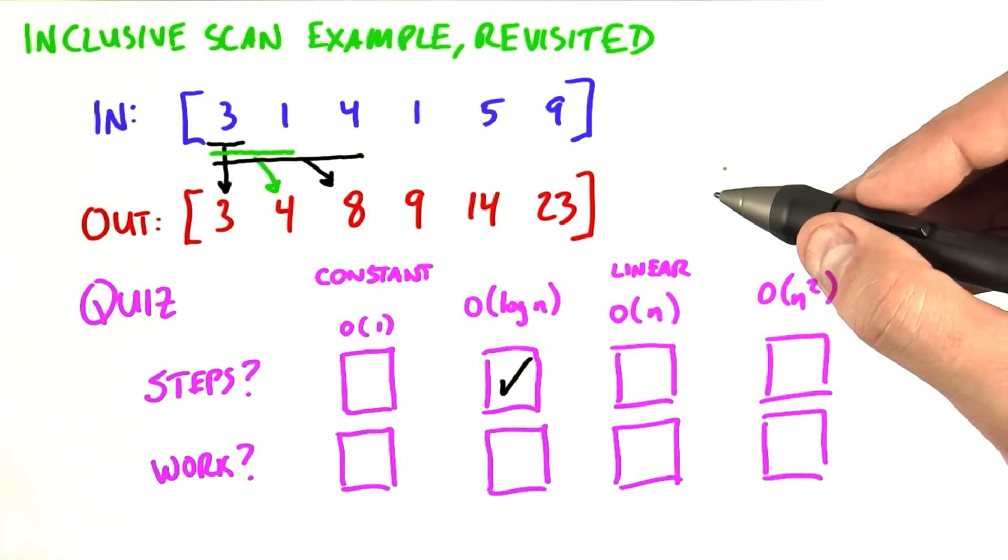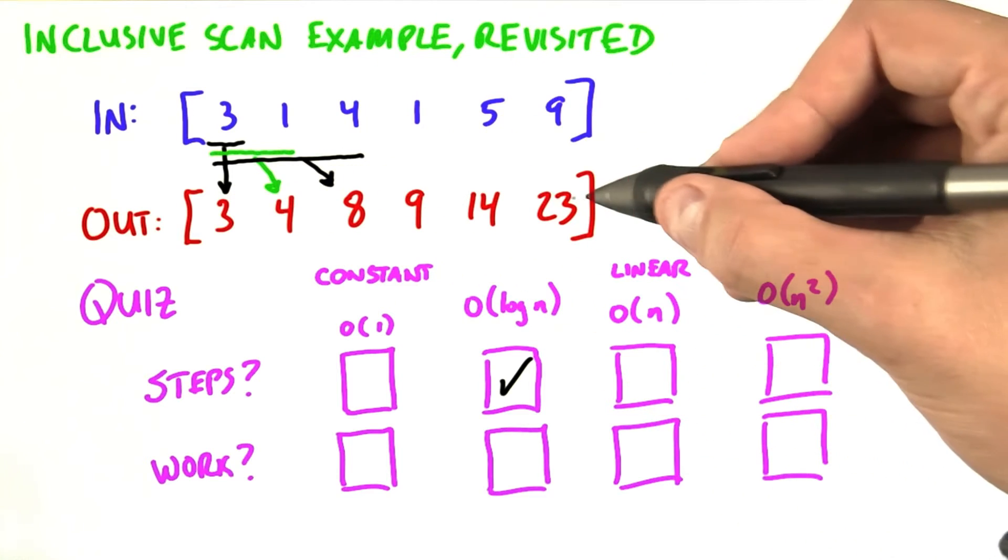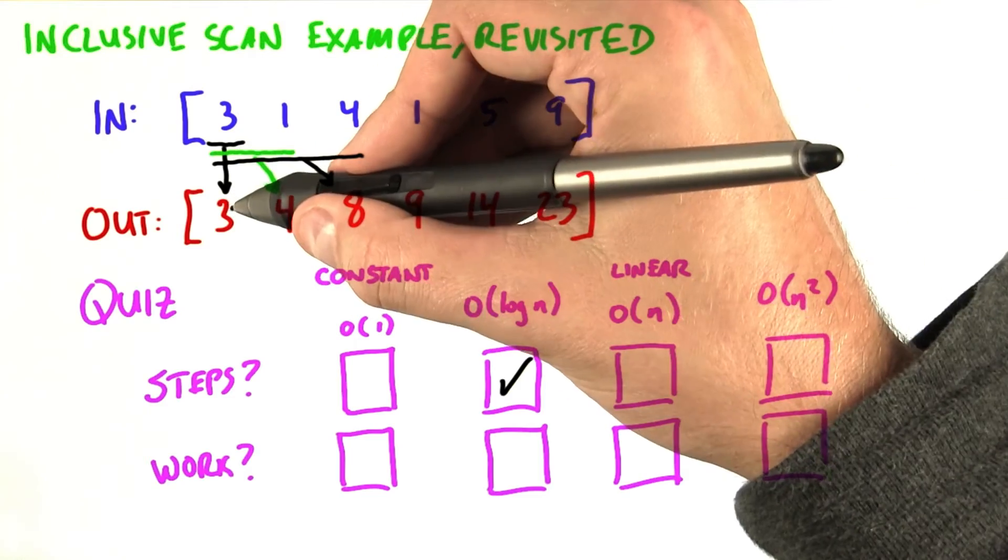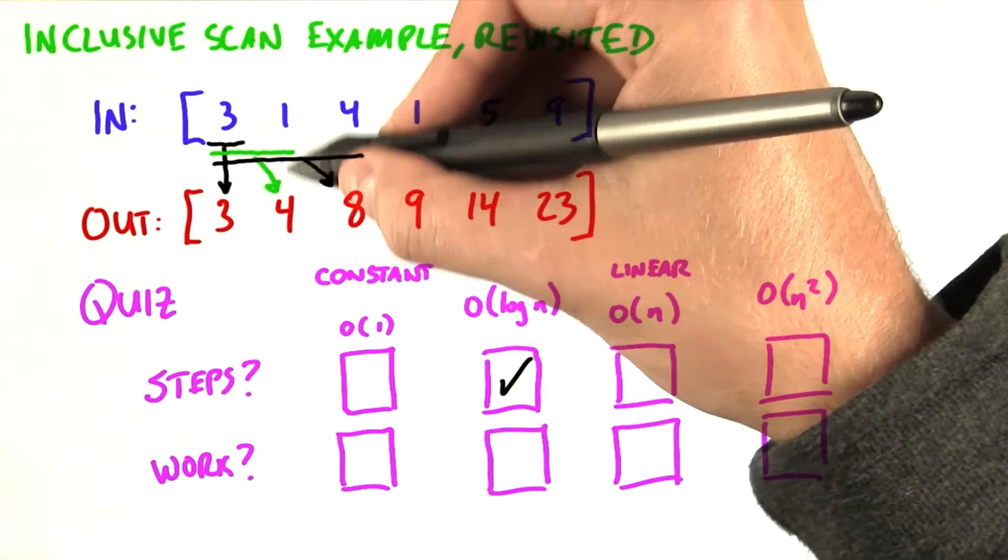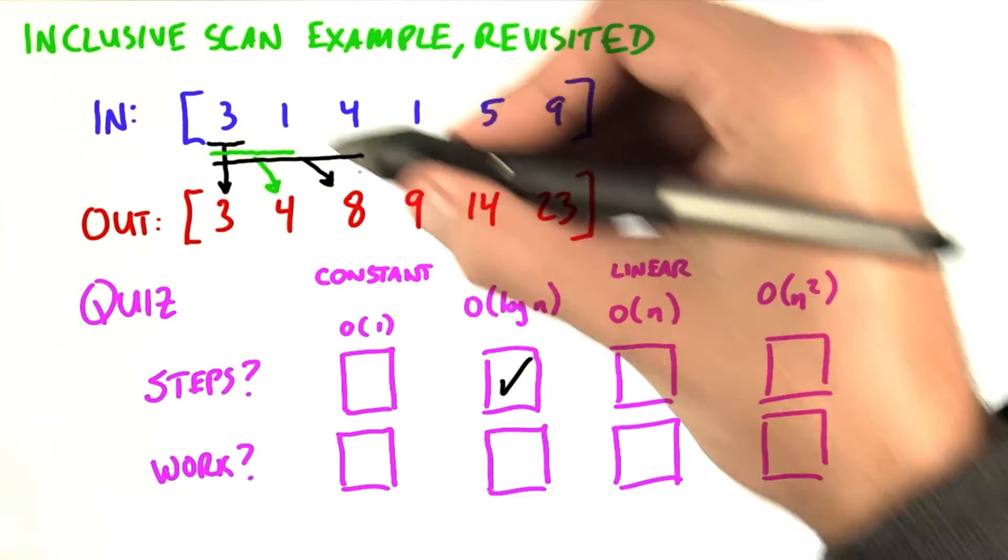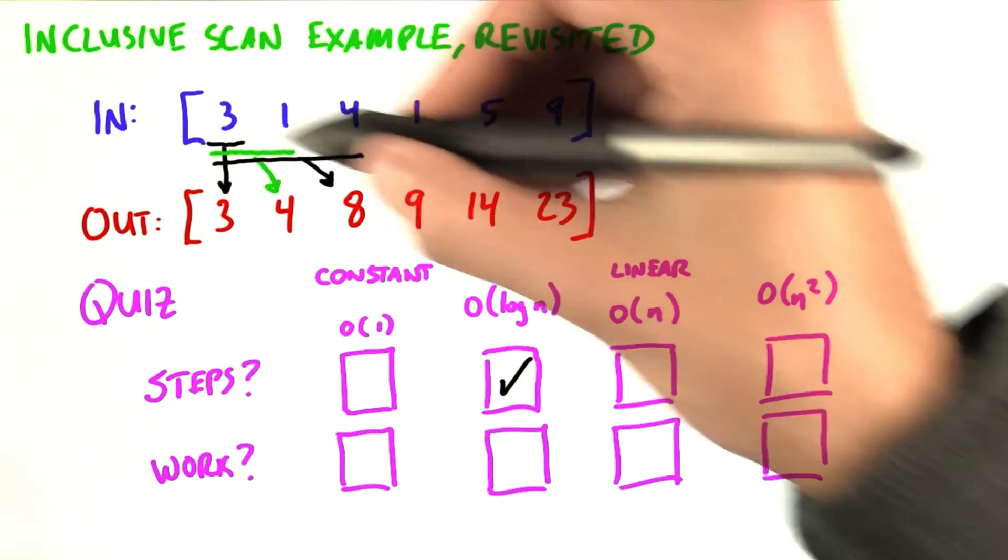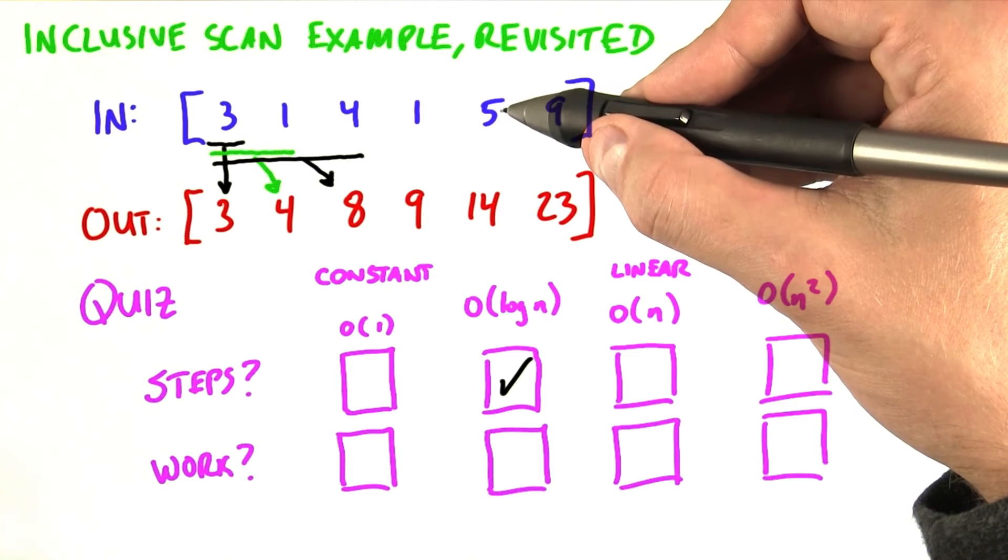To compute the total amount of work, we notice that we're going to have n reductions to perform. The first reduction requires zero additions. The second reduction requires a single addition. The third reduction requires two additions. And in general, the nth output will require n minus 1 additions.